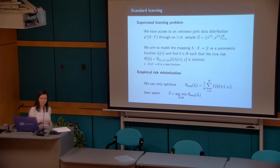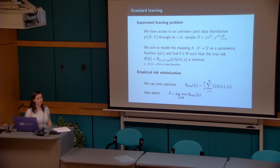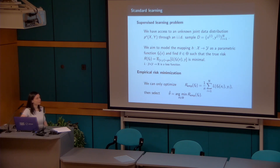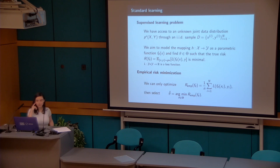I'm going to start with the standard learning problem known from statistical learning. In supervised learning we have access to a joint data distribution — an IID sample of a training dataset with pairs of input and expected output — and we aim to model the mapping from input to output space as a parametric function. We try to find optimal parameters such that the true risk, the expectation of the loss on the whole data distribution, is minimal. Since we do not have access to the underlying data distribution, we resort to empirical risk minimization and select parameters as the minimizer of the empirical risk.